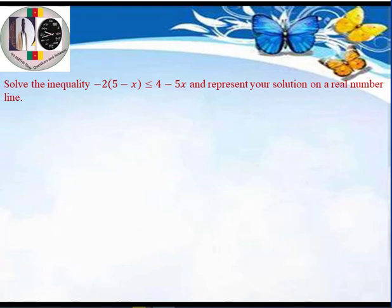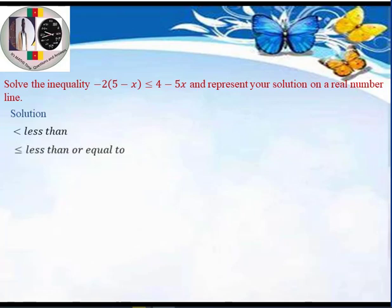If we are comparing two quantities x and y in mathematics, we use inequality signs. This comparison can take four types. One is strictly less than — the quantity to the left is less than the quantity to the right. Another is less than or equal to, meaning the quantity to the left is less than or equal to the quantity to the right.